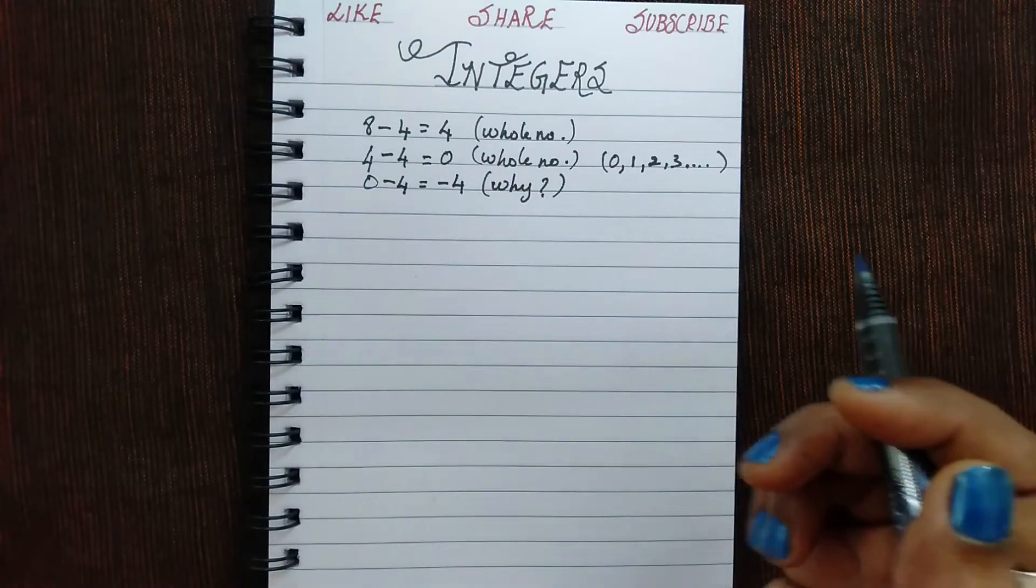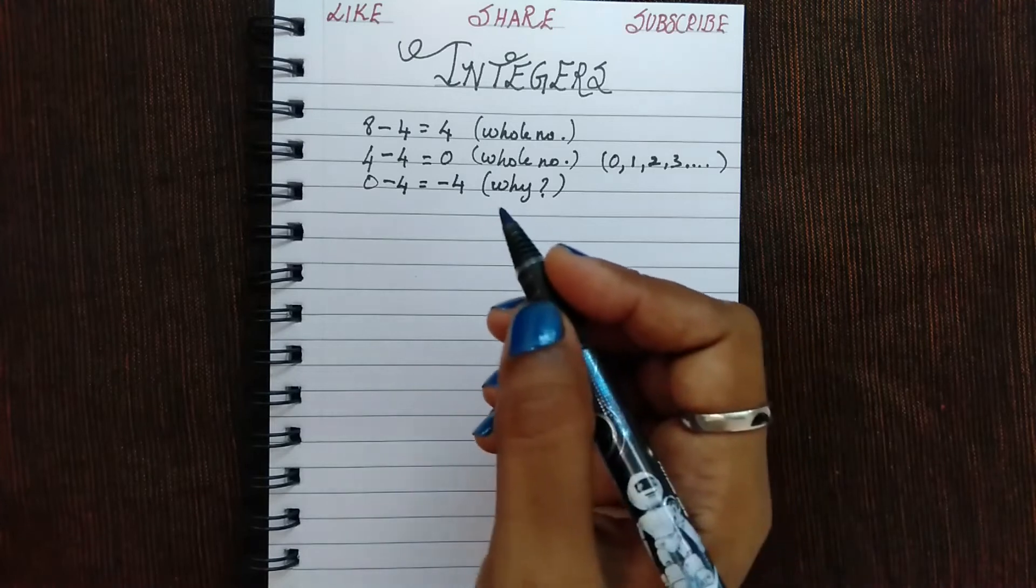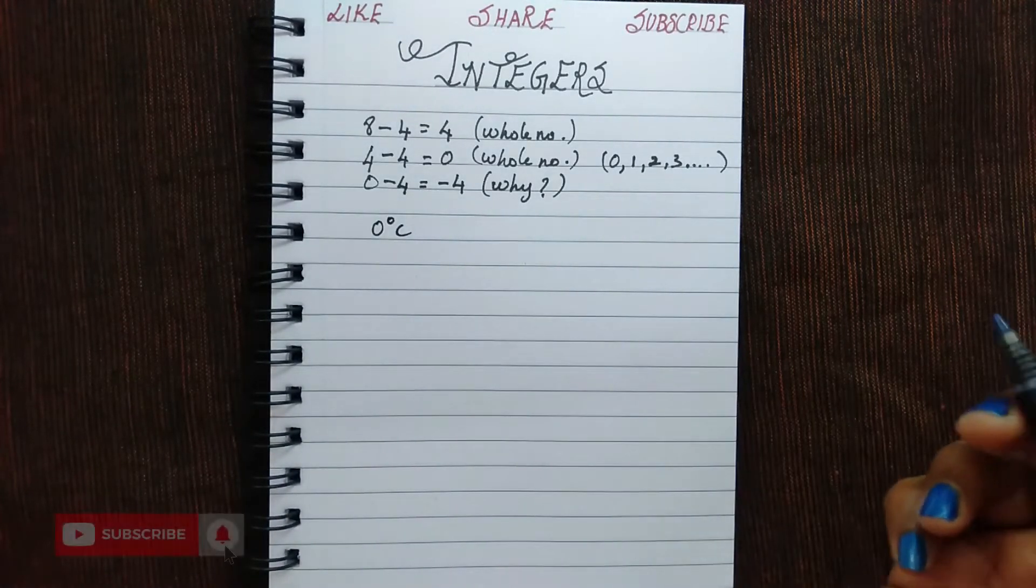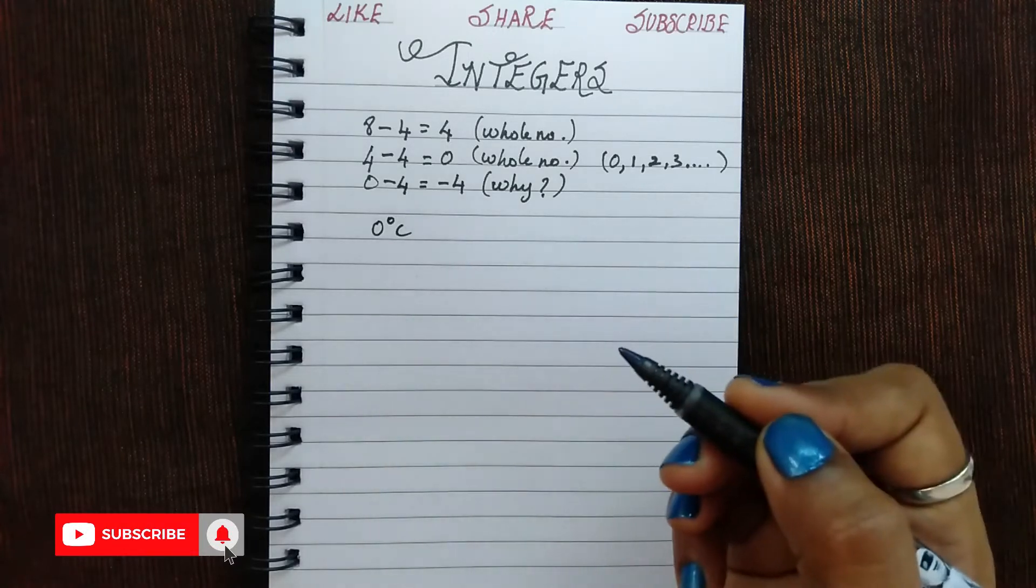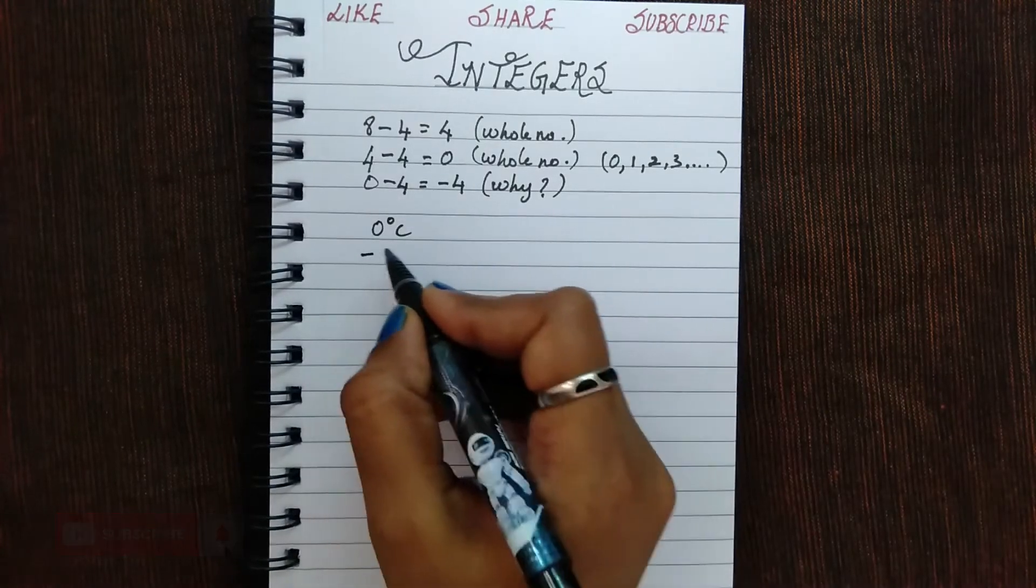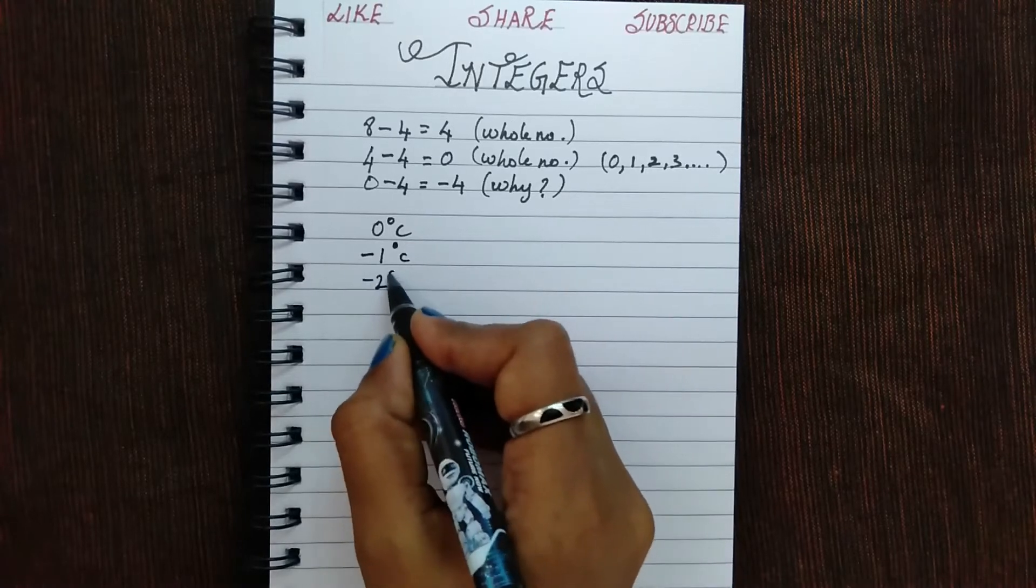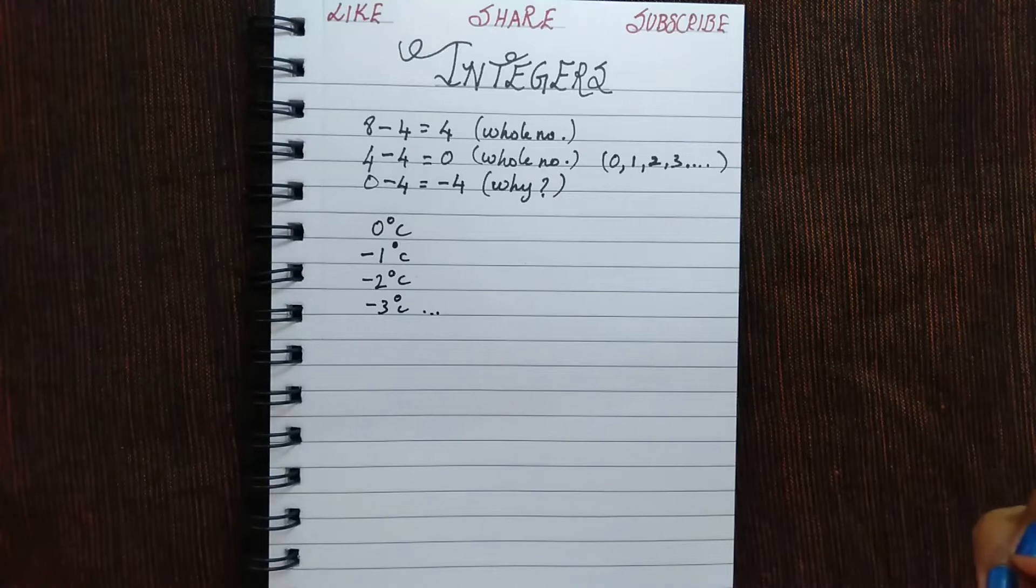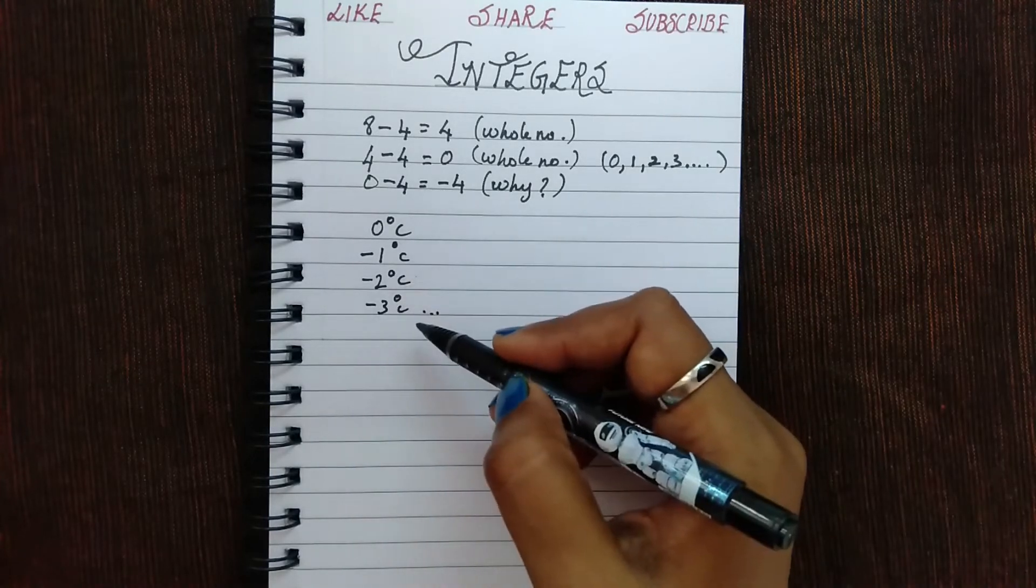Now let's take an example of the temperature. The general freezing point of water is 0 degree Celsius. And if the temperature goes below 0 degree Celsius, then your temperature will be minus 1 degree Celsius, minus 2 degree Celsius, minus 3 degree Celsius and so on. So the numbers which goes below 0 are written with a negative sign.